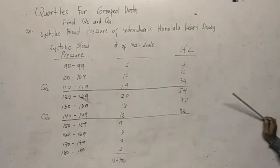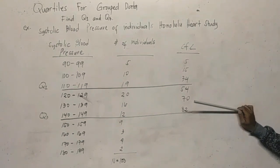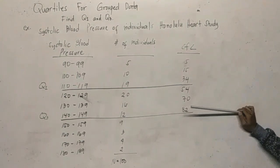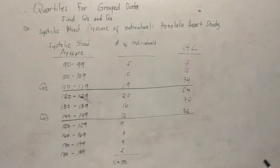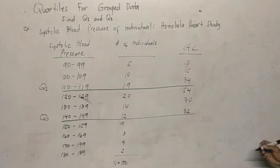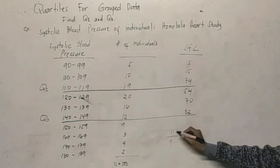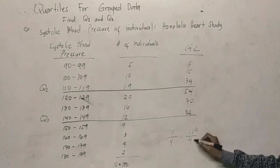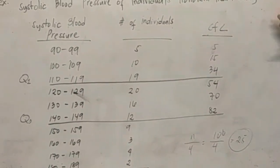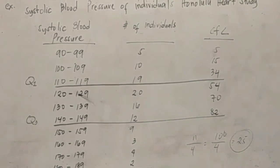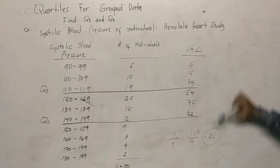What we need to find first is n over 4, to use as our guide — just like how we used n over 2 for the median. So n over 4 equals 100 divided by 4, which is 25. We now look for the value 25 in the cumulative frequency below column — we need the first cumulative frequency that is greater than or equal to 25.